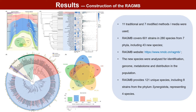To explore the contributions of RAGMB in terms of strain resources, we compared the differences at the species level between RAGMB and a health-related gut microbial biobank. RAGMB provides 121 unique gut species, including 8 strains representing 4 species from the phylum Synergistota.